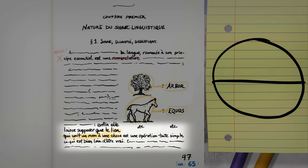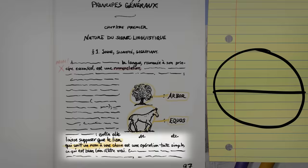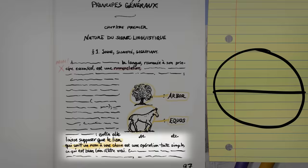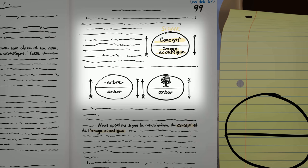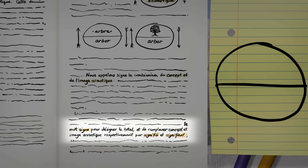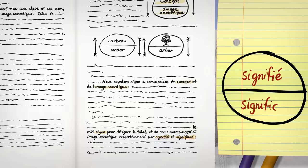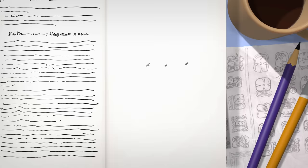Saussure says we're liable to dupe ourselves into thinking a word is a name for a thing, a noun linked to une chose. It's not. Instead, it's flip, flip. A word binds together two elements, some concept and some sensory sound or sight, an arbitrary connection of meaning and expression. Together, these make up a signe, a sign. What's meant and expressed are signifié, signified, and signifiant, signifier.